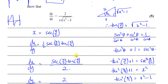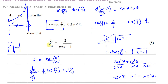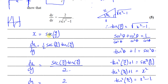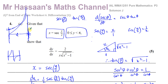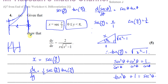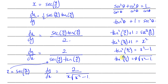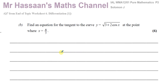That's the answer to question 4, part A. Now for part B: find an equation for the tangent to the curve y equals the square root of 3 plus 2 cosine x at the point where x equals π over 3.